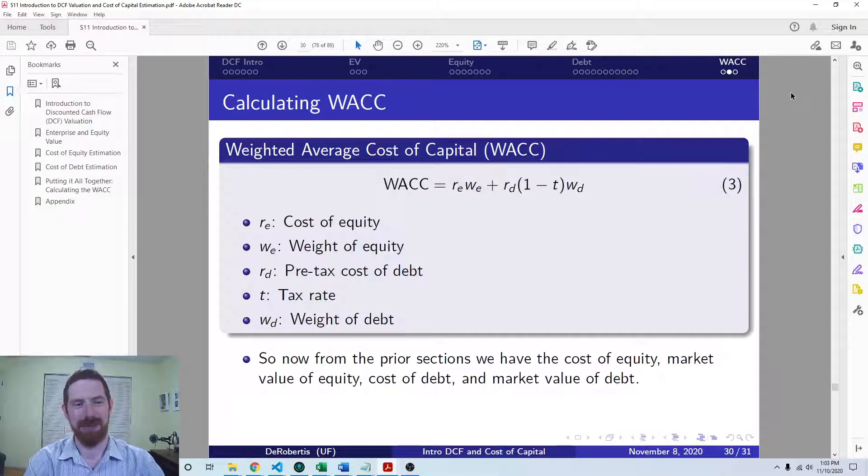So if you have calculated a weighted average before, then this should feel very familiar to you because all it is is just a weighted average. And it's just a weighted average of the different costs of capital weighted by the percentage of that source of capital in the overall capital structure.